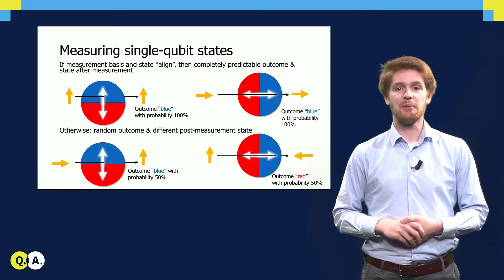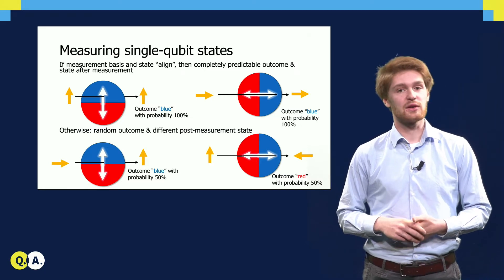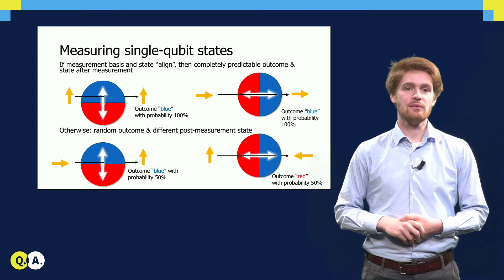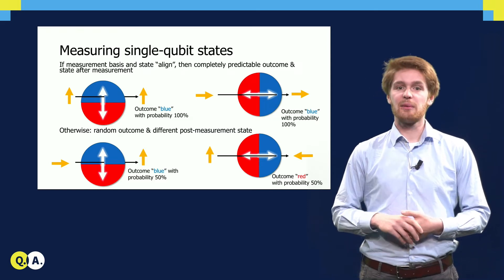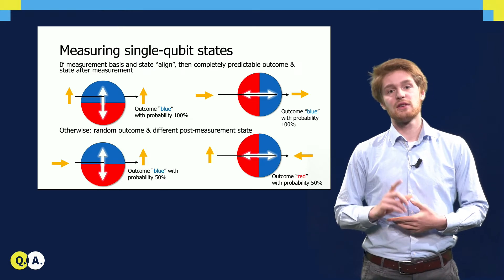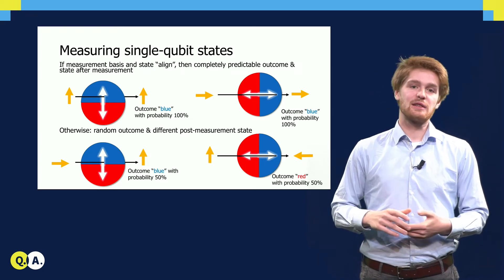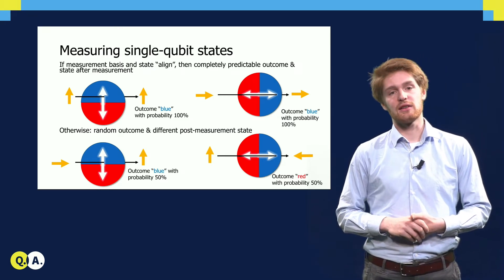In the left one, we measure a horizontal state in a horizontal basis. The arrow passes through the slit unharmed, and the outcome is blue since the arrow points upward. A similar explanation can be given for the picture in the right upper corner.